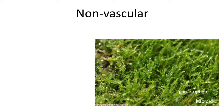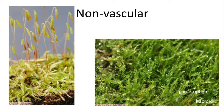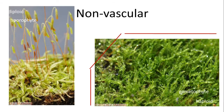The gametophyte eventually produces a structure that raises up quite a bit above the rest, and this part is actually diploid — so this part is the sporophyte, produced on the plant itself. From the sporophyte, we can see that the upper part of the sporophyte is called a sporangium, and in the sporangium you get all these tiny little spores.